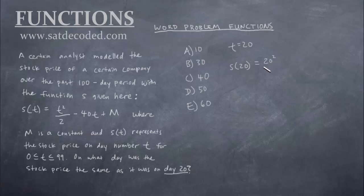Remember that does not mean s times 20, that just means the function of s evaluated at 20, evaluated on day number 20. So wherever we see t, we're going to replace it with 20 right now. So we have t squared, so that becomes 20 squared, divided by 2 minus 40 times 20 plus m. So right now I have no idea what m is. In fact, we will probably never know what m is because it's just some constant. There's no other information in this question that would help us solve m, so we're going to leave it alone. So let's just keep evaluating what we can and simplify what we got. 400 divided by 2 minus 800 + m. So that means 200 - 800 + m, which ultimately becomes -600 + m. So that's our answer to the stock price on day 20.